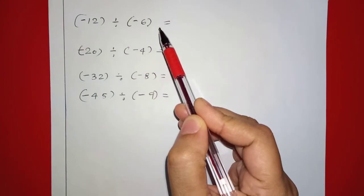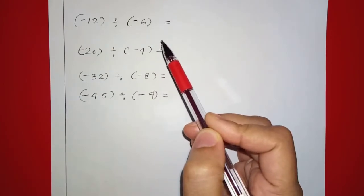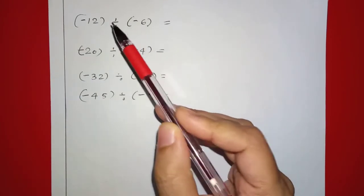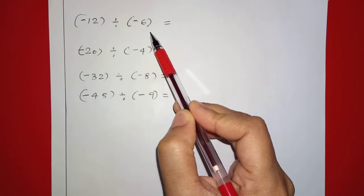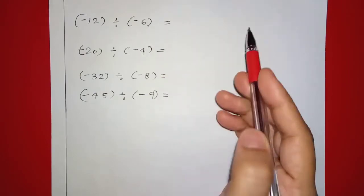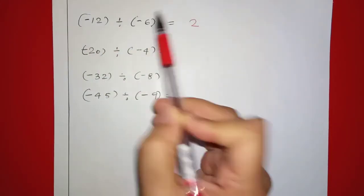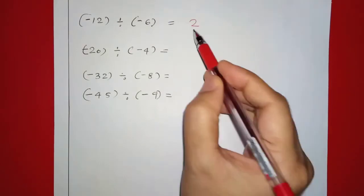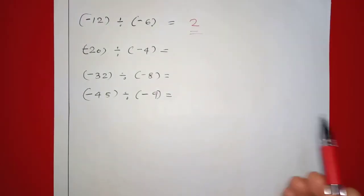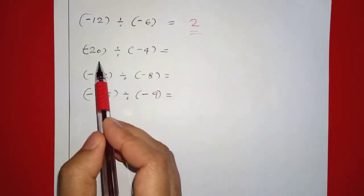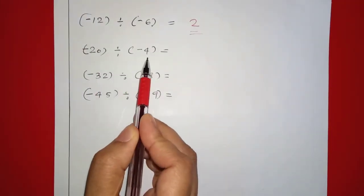Negative 12 divided by negative 6: both are negative, that is the same sign, so the answer is positive 2. Next: negative 20 divided by negative 4.